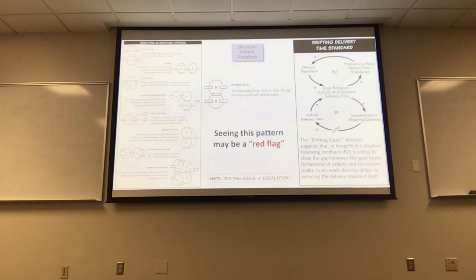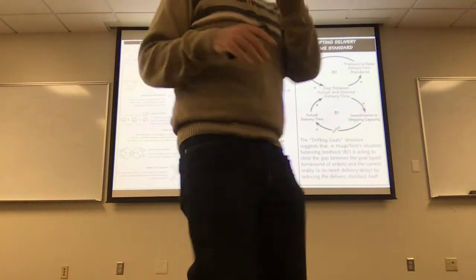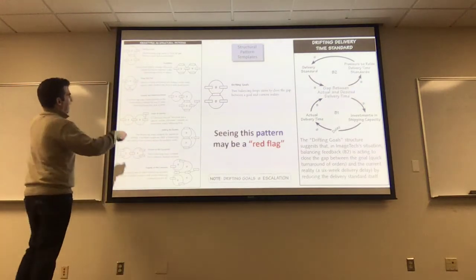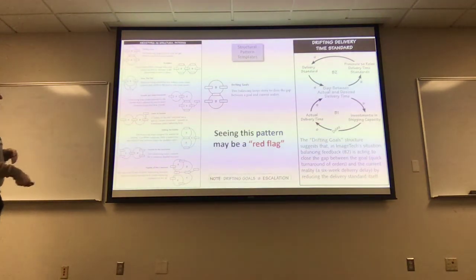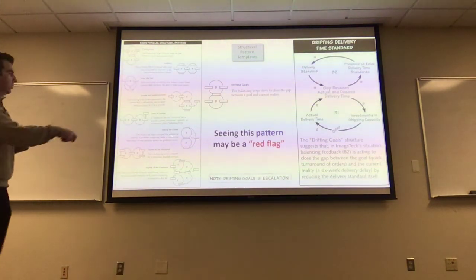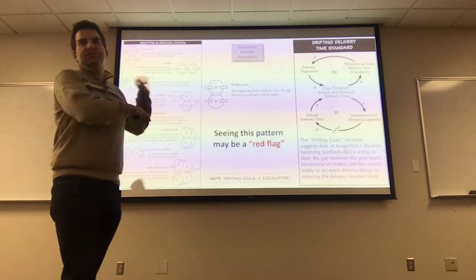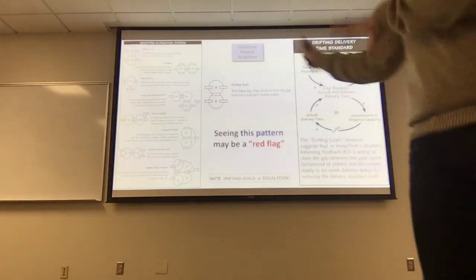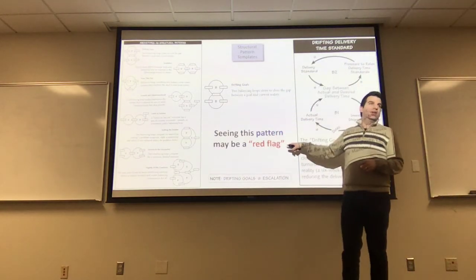Seeing this pattern — two balancing loops next to each other, one adjusting the goal and one adjusting performance — is a red flag that maybe we need an intervention. I don't actually have to care about all the specific variables; if I just back up and see these two things next to each other, it allows me to make sense of the system. For the last part of the assignment, I ask you to draw three feedback loops coupled together. A tragedy of the commons or growth and underinvestment would be fine — any of these where you can see three or more loops.